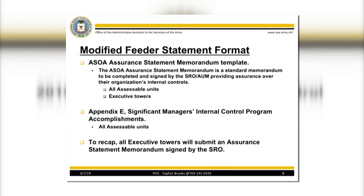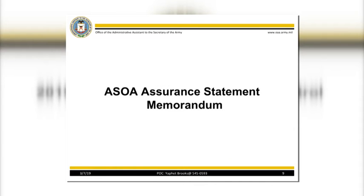In essence, your organization's feeder statement will consist of the ASOA Assurance Statement Memorandum template and Appendix E, Significant Manager's Internal Control Program Accomplishments. Executive Directors and AUMs from Headquarters, AHS, and CMH will sign an Assurance Statement Memorandum verifying that internal controls are in place and operating effectively. All Executive Towers will submit an Assurance Statement Memorandum signed by the SRO. We will discuss the format of the ASOA Assurance Statement Memorandum.